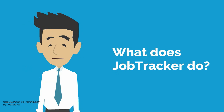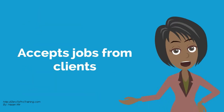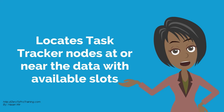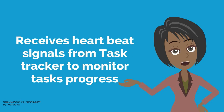What does JobTracker do? JobTracker accepts jobs from clients. It determines the location of the data by communicating with the NameNode. It locates TaskTracker nodes at or near the data that has available slots. It delivers the work to the chosen TaskTracker nodes, and receives heartbeat signals from TaskTrackers in order to monitor progress of tasks.